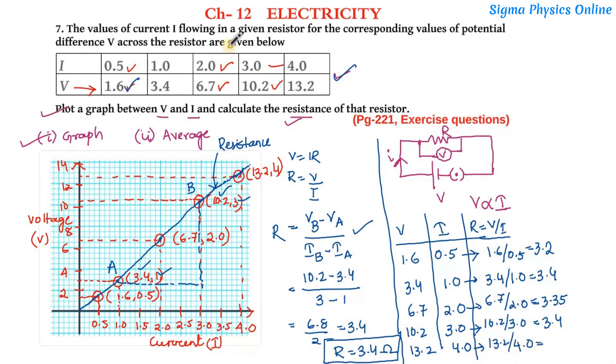And the last value is 13.2 by 4.0 whose value comes to 3.3. Now these are the values of R which we got in each observation. The value of the resistance can be found out by averaging these values. We'll add up all these values and then divide it by 5, so it comes to be 3.2 plus 3.4 plus 3.35 plus 3.4 plus 3.3 divided by 5.